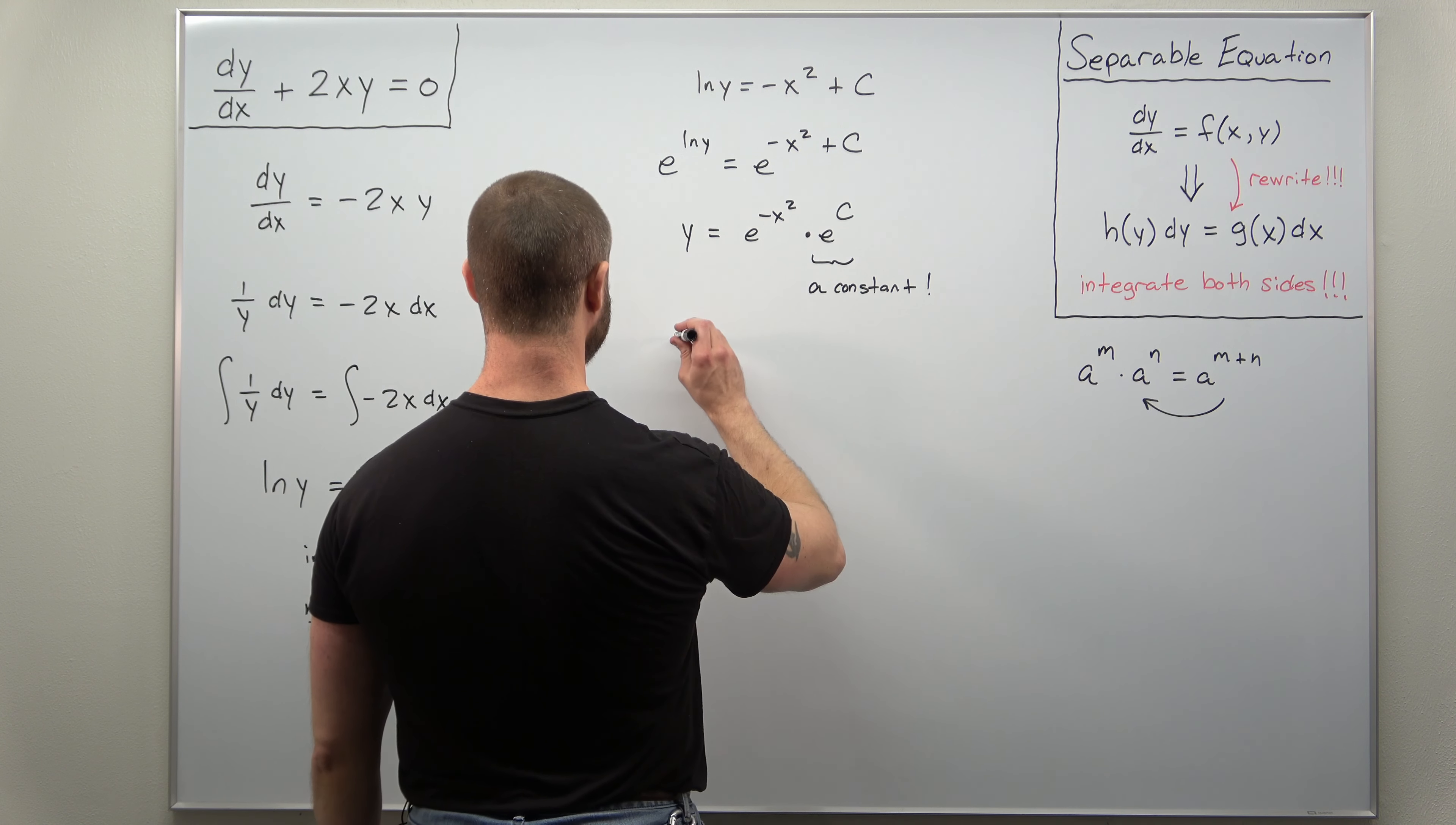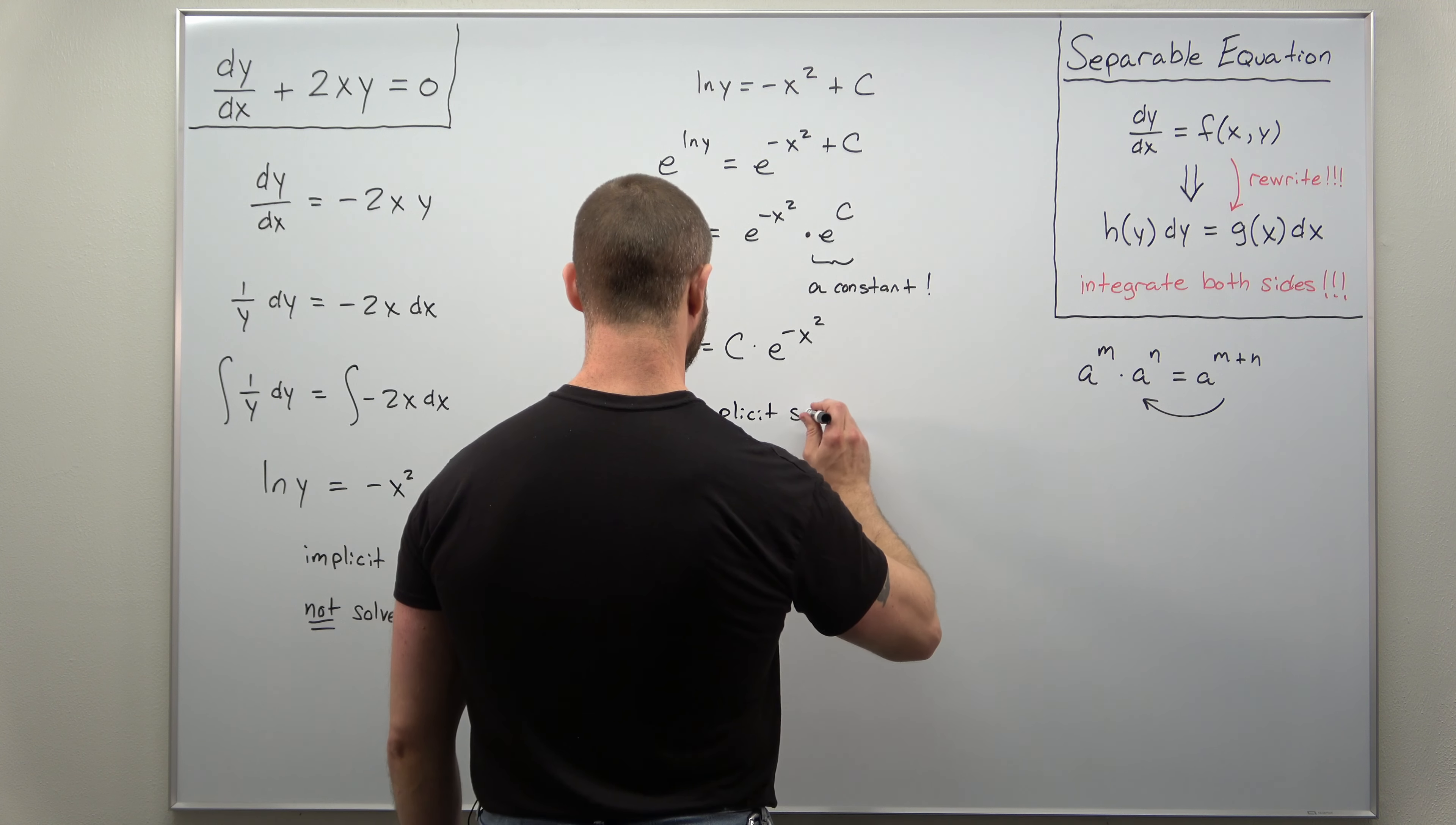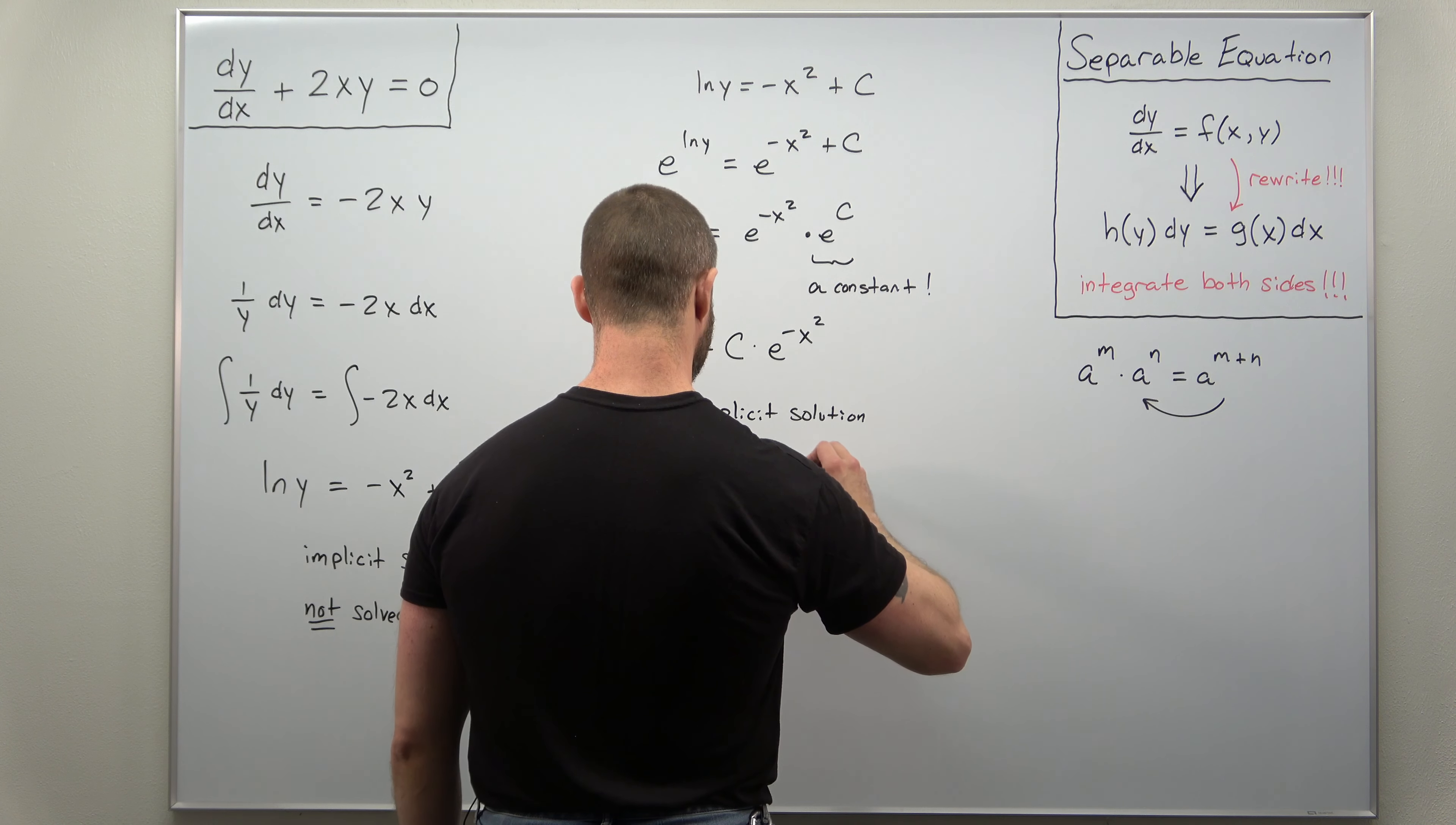So you can write here your solution. We'll pull that constant out front. You can write this as c times e to the negative x squared. And this is what we call an explicit solution. And just keeping in mind implicit solutions are not solved for y. An explicit solution is solved for y.